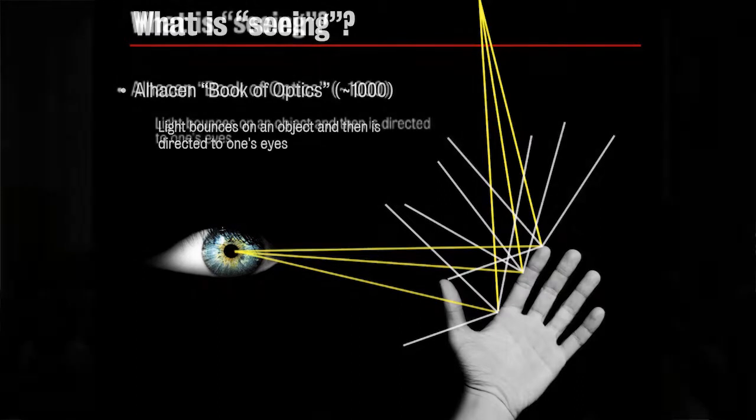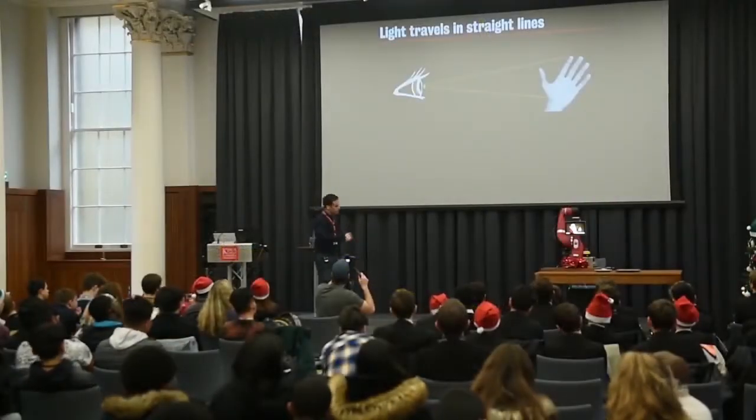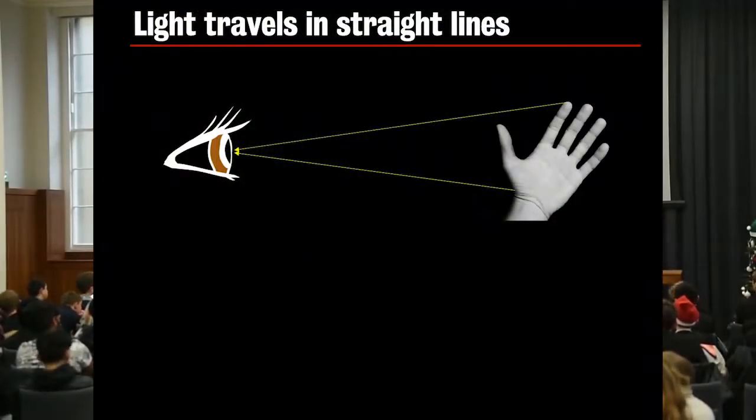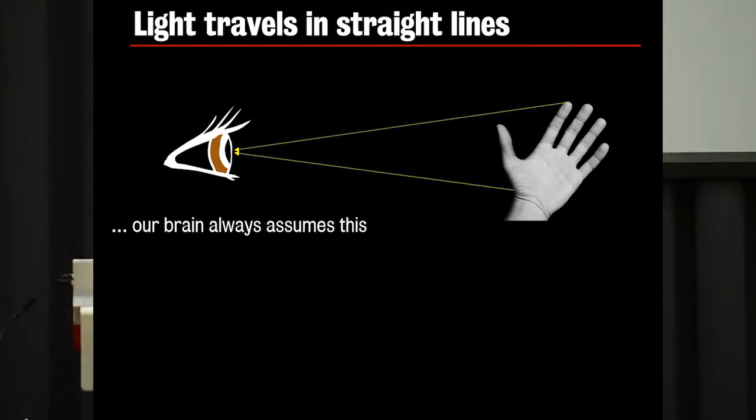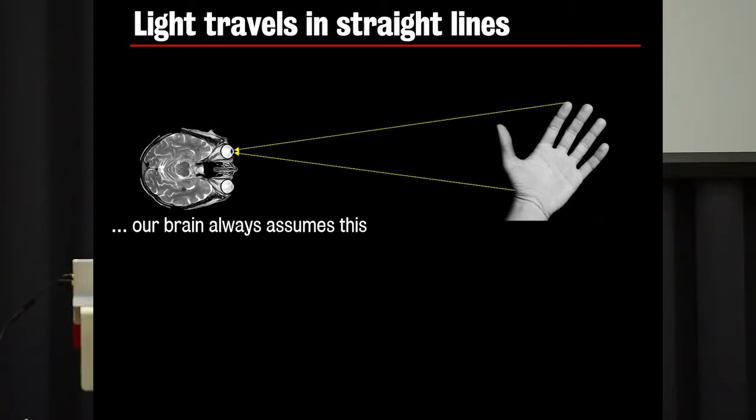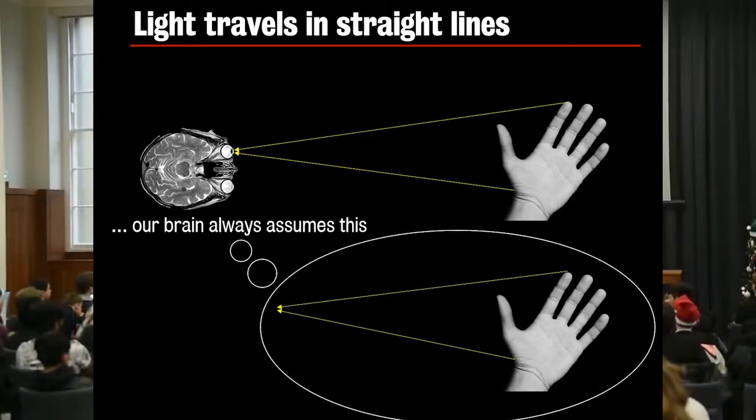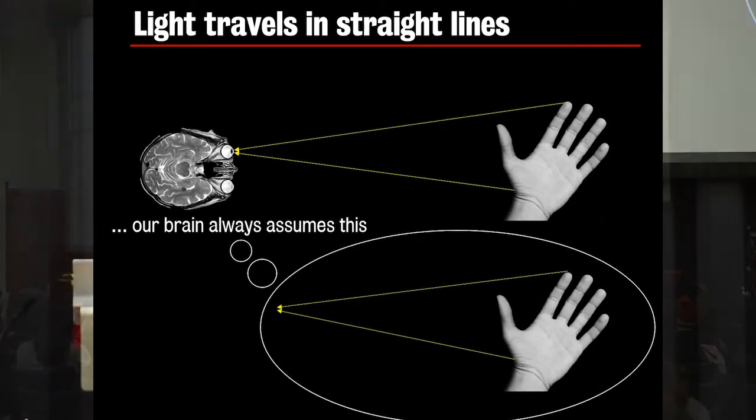Now, what does the brain do here? So the brain is seeing these rays of light coming from my hand. And the brain always assumes that light travels in straight lines. So instead of having this picture of an eye here, let me put a more scientifically accurate cross section of a human skull. So here we see the eye and the nerve that connects it to the brain. So now our eye is receiving these light rays, and it's just imagining that these light rays come in a straight line, so the brain imagines the hand is here. Why am I focusing on this, which seems kind of stupid?